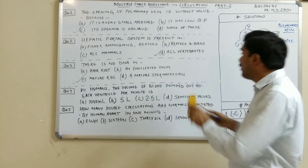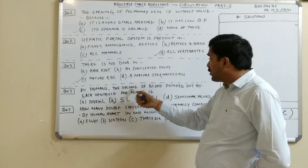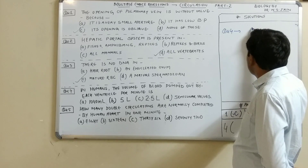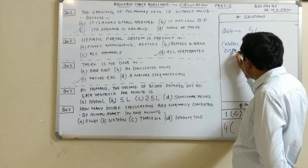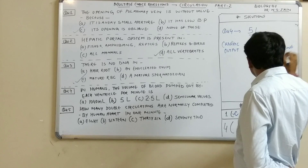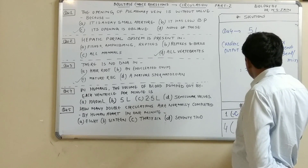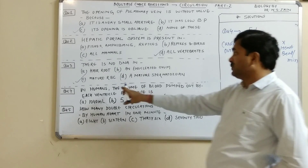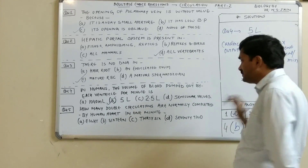Question number four: in humans, the volume of blood pumped out by each ventricle per minute is? The answer is five liters. Cardiac output equals stroke volume multiplied by heart rate per minute — that is 70 ml × 72 beats per minute — which comes out to approximately five liters. Question number four answer is B.